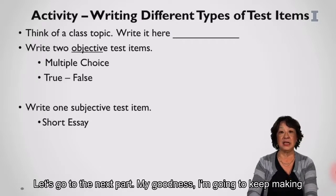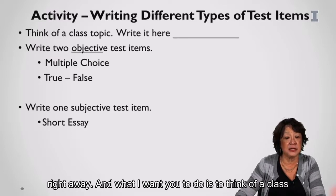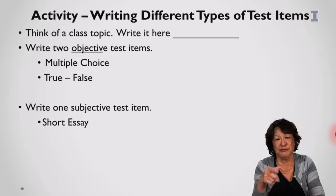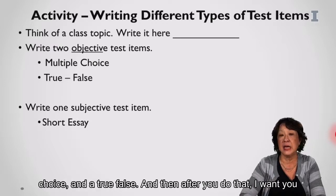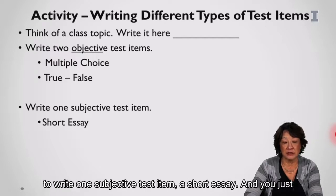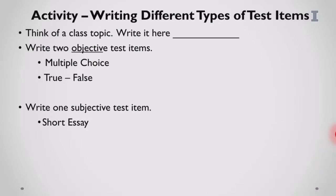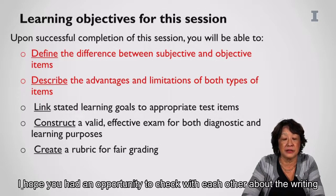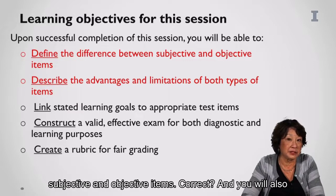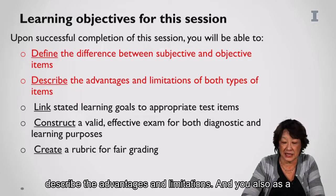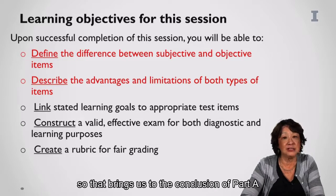I just gave you an exam about exam items. Now here's an activity where you apply it right away. Think of a class topic and write it down. Write two objective items — a multiple choice and a true/false — and then one subjective test item, a short essay. I hope you had an opportunity to check with each other. That leads us to the end of today's video: you were able to define the difference between subjective and objective items, describe their advantages and limitations, and as a bonus, you got to write both types of test items. That brings us to the conclusion of Part A.